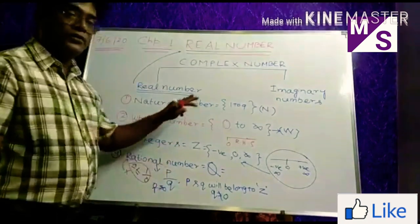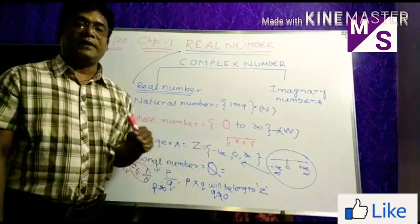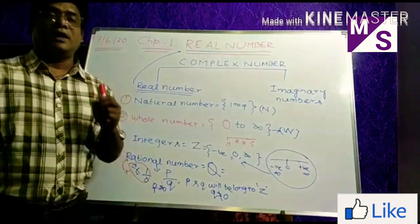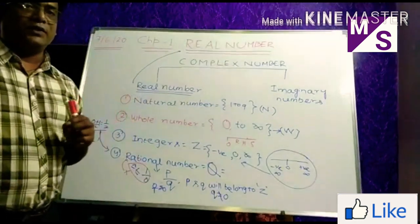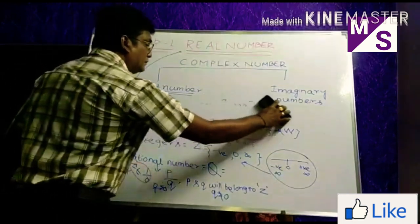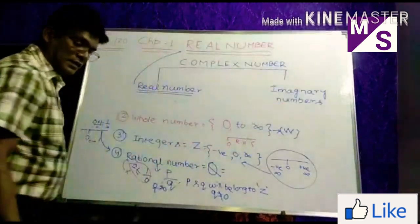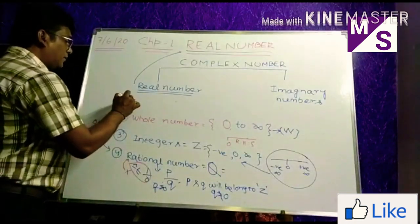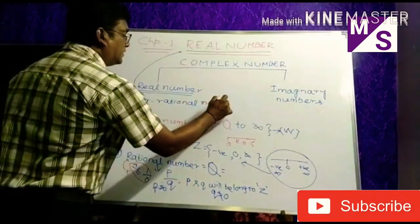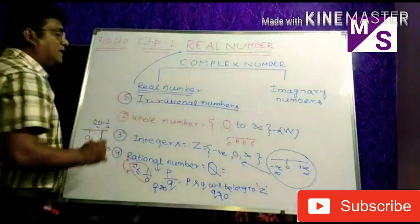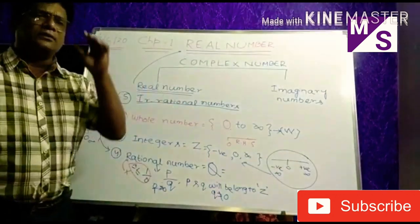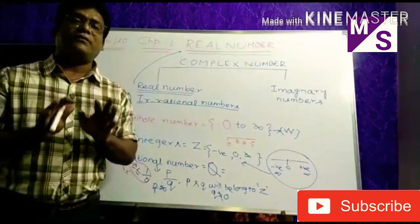Now I am going to tell you about a very important number system — that is called irrational numbers. The name suggests 'irrational', meaning they are not rational. They cannot be expressed in the form of P by Q.